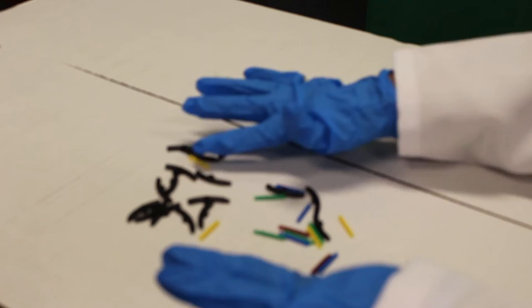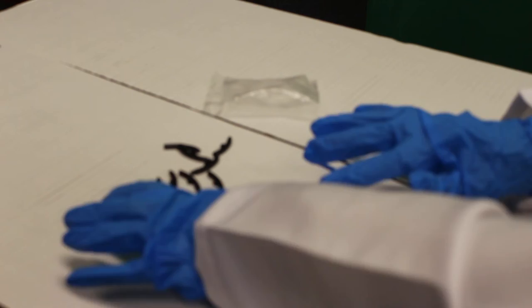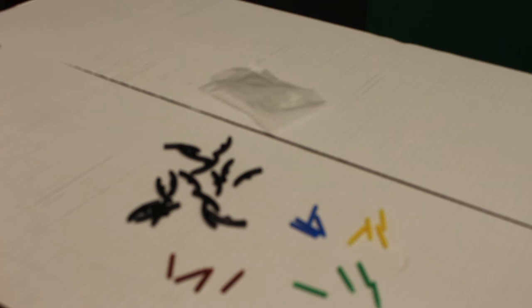First, I'm going to lay all the pieces on the table. The way we're starting out this position is very much like how researchers were doing in the 1950s. They too experimented with models like we're doing right now. The long curved black pieces represent something called phosphoric acid. These two individual components form a basic framework in which phosphoric acid and sugar alternate.